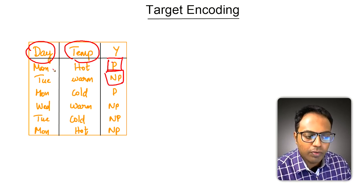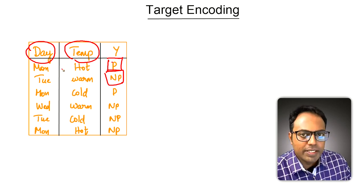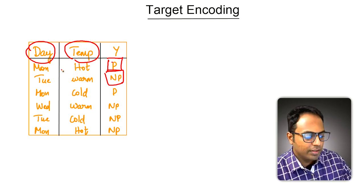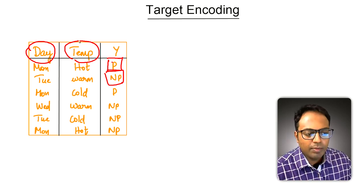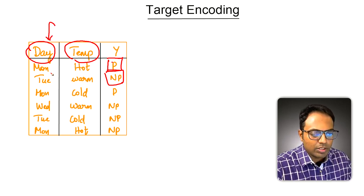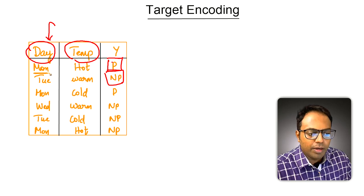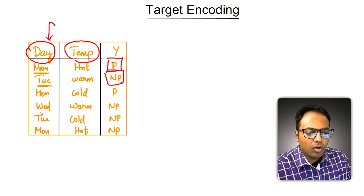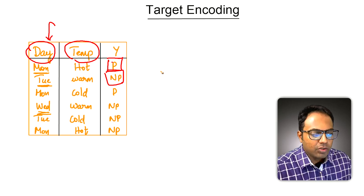We are going to convert it to probability scores. Let's take one variable at a time and start with the day variable. In the day column there are three possible values: it could either be Monday, Tuesday, or Wednesday — only three possible values.